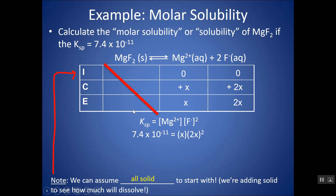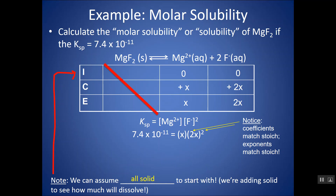Now I can plug into my equilibrium expression. Here's the KSP on the left-hand side, here's my Mg²⁺ concentration as x, and here is my F⁻ concentration as 2x, squared. Notice the coefficient appears in two places: from the ICE box stoichiometry, and also as the exponent — a lot of times people forget one or the other. You could also skip the ICE box and simply assign the molar solubility of MgF₂ as x, then Mg²⁺ = x and F⁻ = 2x because for every 1 Mg there are 2 F's, giving the same squared expression.